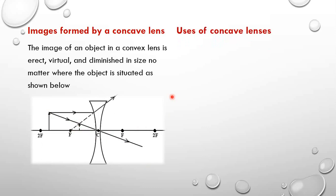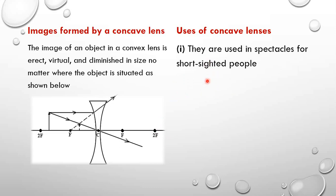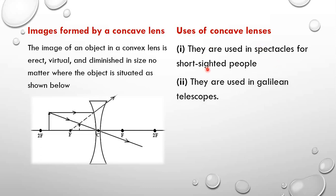Let us look at the uses of the concave lens. Concave lenses are used in spectacles for short-sighted people, and they are also used in Galilean telescopes. A Galilean telescope is a type of telescope, and we shall look at telescopes when we are discussing optical instruments.